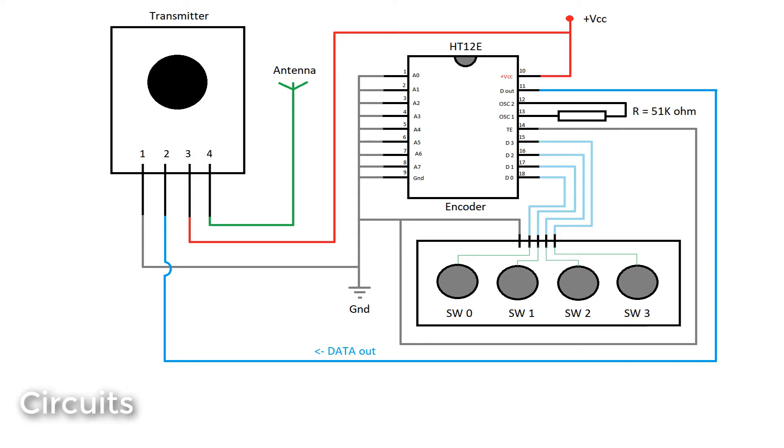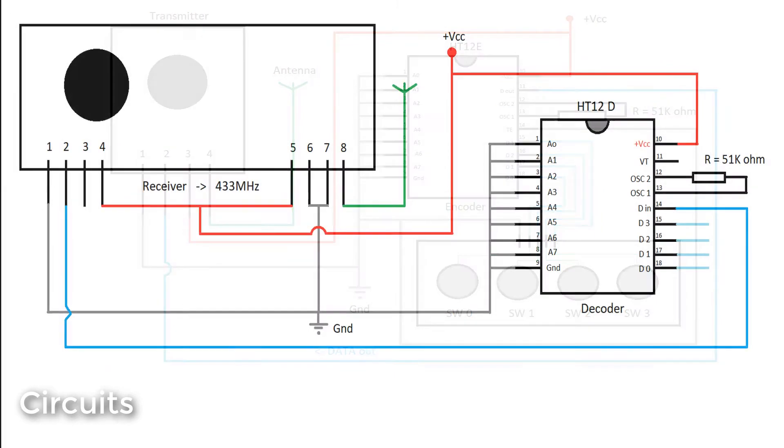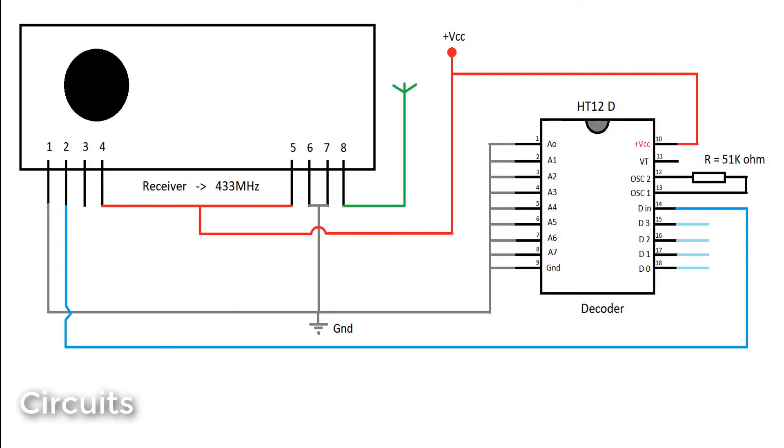For the receiver circuit, connect the second pin of your receiver to the 14th pin of your decoder. Pin number 15 to 18 are the output pins.